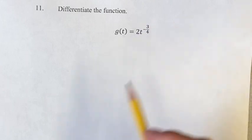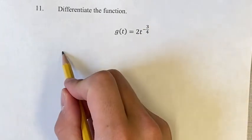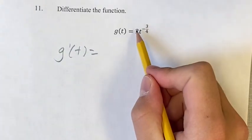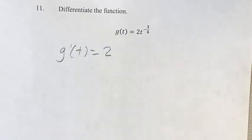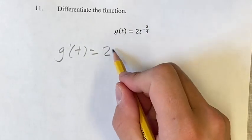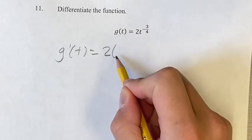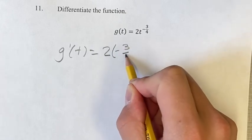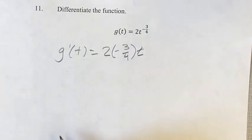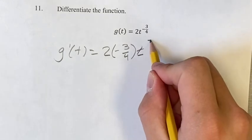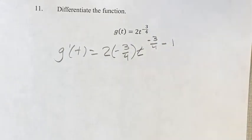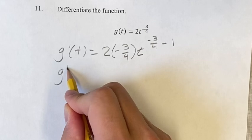Since we have a power function, we take the derivative. We start with the coefficient 2, bring the exponent down and multiply it into the coefficient — so negative 3 fourths — and then our new exponent is negative 3 fourths minus 1. This is the standard form of the power rule.